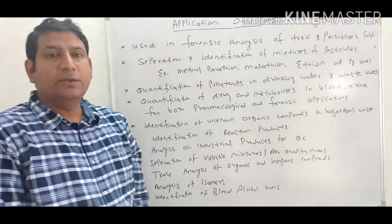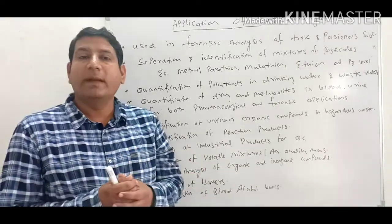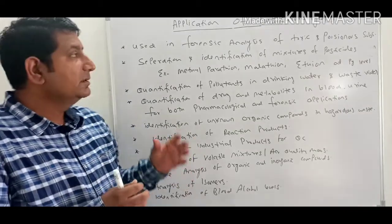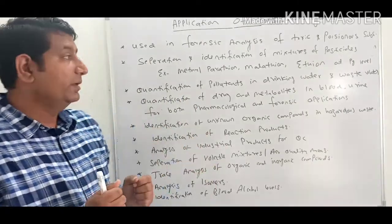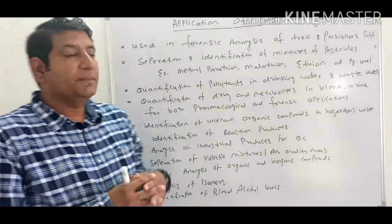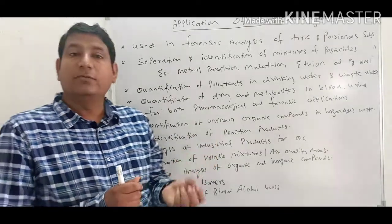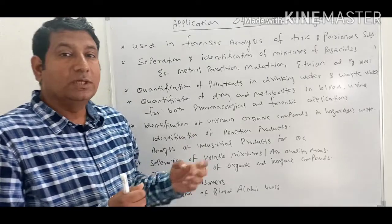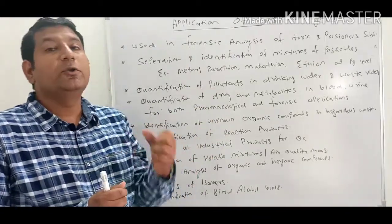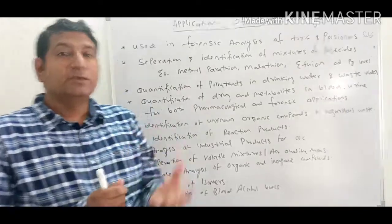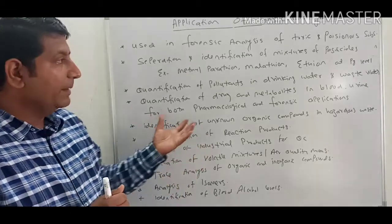In agriculture, pesticides are used to control pests and the amount of pesticides must be checked in food and products obtained from agricultural sources. Pesticides like parathion, malathion, and ethion are harmful to humans if they enter food and supplements. A method capable of determining the presence of these pesticides in very minor quantities is required, and gas chromatography is the most suitable technique for their analysis and separation.